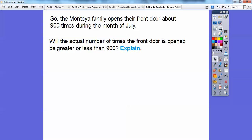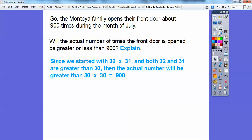Will the actual number of times the front door is open be greater than or less than 900? Well, since we started with 32 and 31 and both those numbers are greater than 30, then the actual number will be greater than 900, 30 times 30. Because these two numbers are greater, so I know it's going to be greater than the product of these two numbers right here.